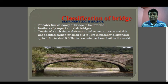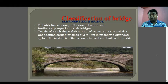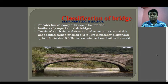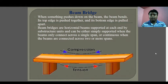The first category is masonry arch bridges, which are the basic and earliest type of bridge developed in ancient history. Aesthetically superior to slab bridges, they are considered arc-shaped slabs supported on two opposite walls. They were adopted for spans of 3 to 15 meters in masonry, extended up to 519 meters in steel and 305 meters in concrete.